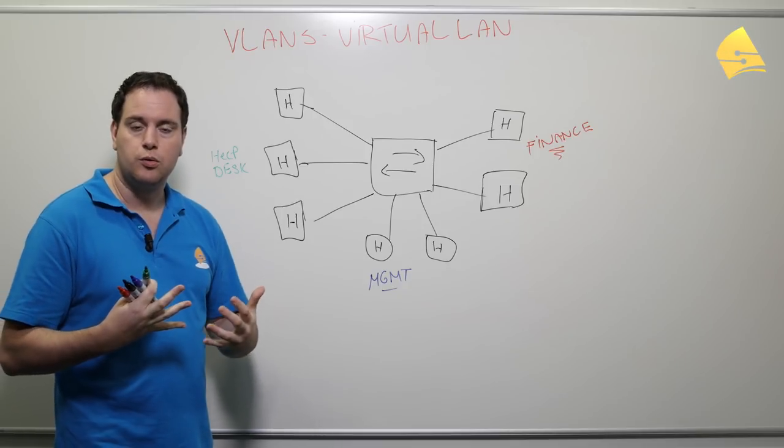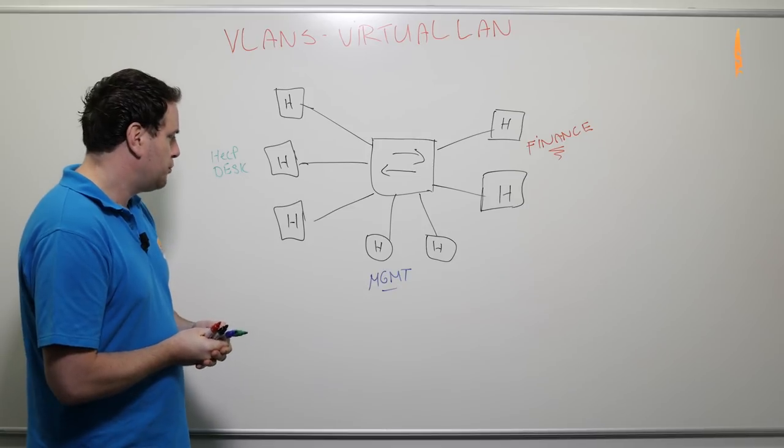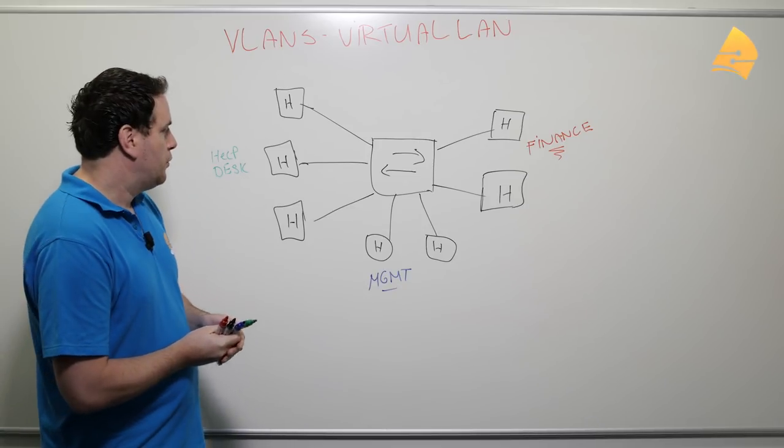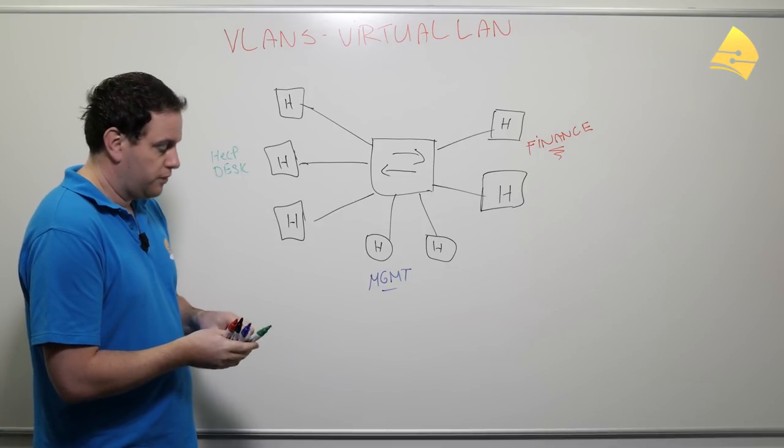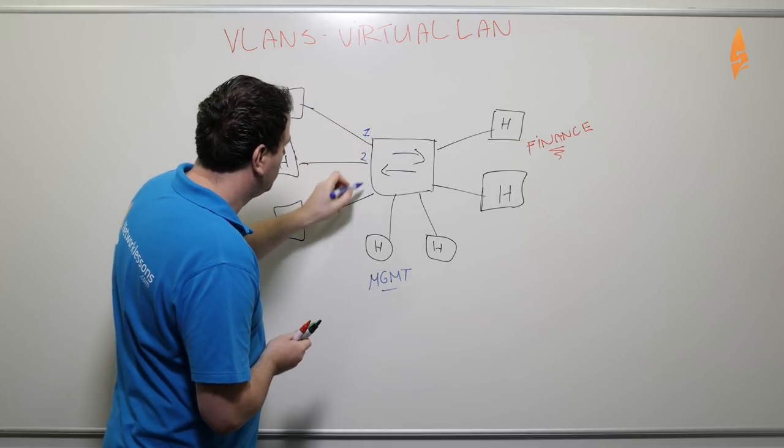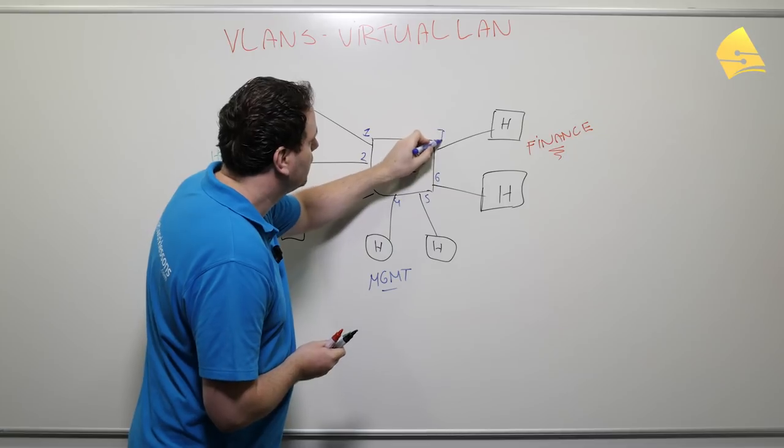So what we can do is we can use VLANs for this, a virtual LAN. Now what this means is we can create VLANs and we can assign interfaces to it. So let me give you an example. First let's add some interface numbers over here. Five, six and seven.